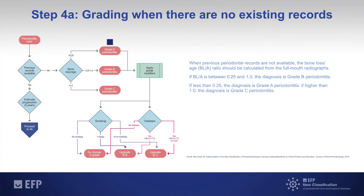If the ratio is less than 0.25, then the diagnosis should be grade A periodontitis, which is the slowly progressive periodontitis. On the contrary, if this ratio is higher than 1, then the diagnosis is grade C periodontitis, which is a periodontitis of rapid or high progression.